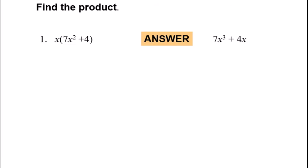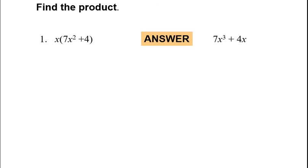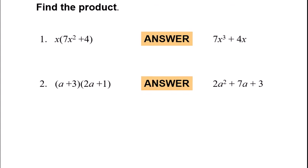So these are your guided practice — find the products. Go ahead and pause and then check the final solution. I distribute that x, which means I'm adding 1 to my exponent, so I get x times 7x squared = 7x cubed, and then 4 times x is 4x. If you distribute each term and use that box method, you should end up with 2a squared plus 7a plus 3.